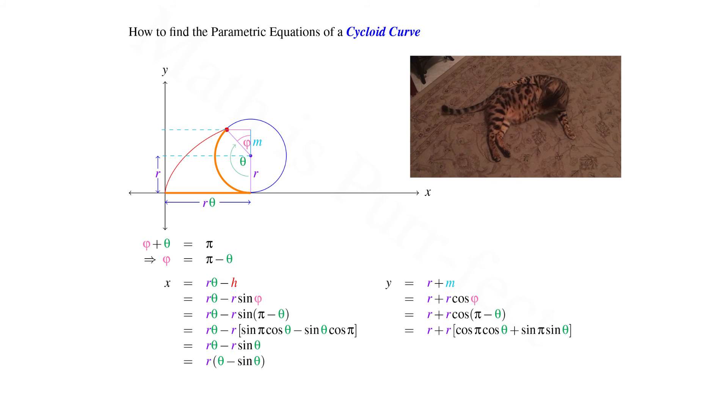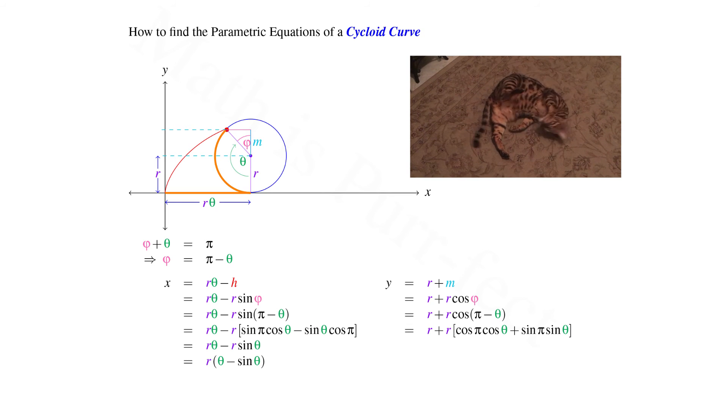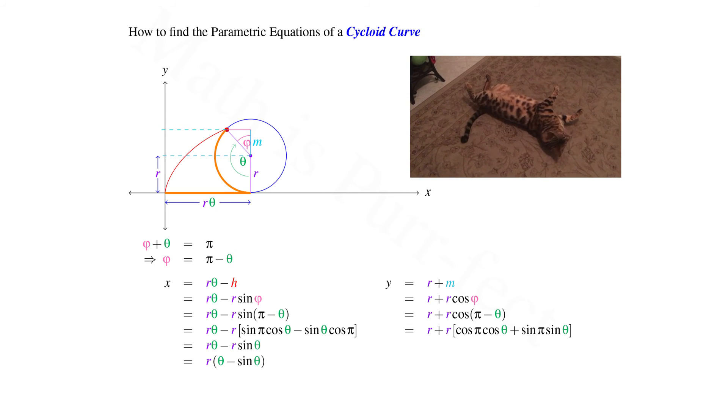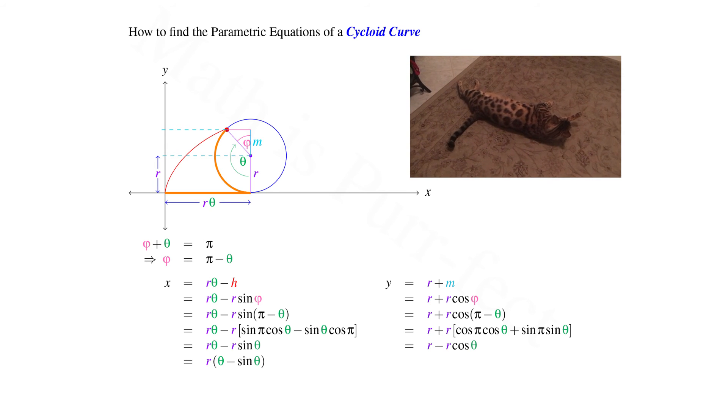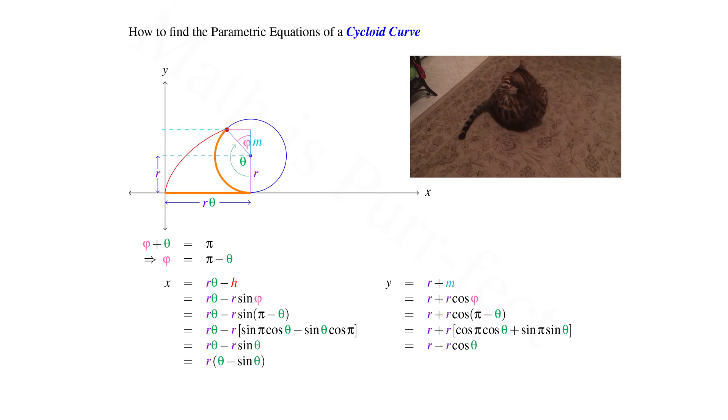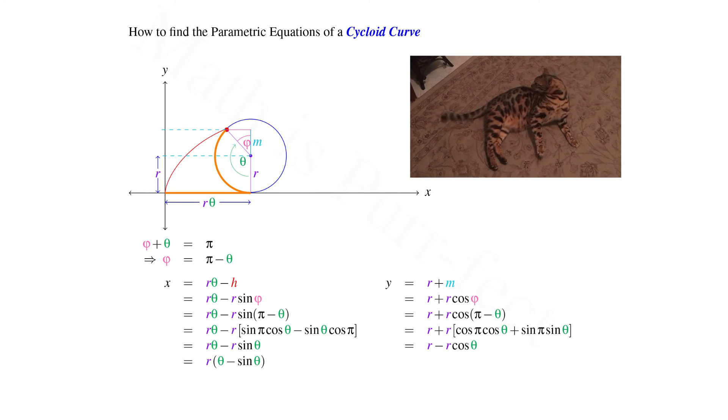Using the difference formula for cosine, we expand this expression into r plus r times the quantity, cosine pi times cosine theta plus sine of pi times sine theta. Given that cosine of pi is negative 1, and sine of pi is 0, this simplifies to r minus r cosine of theta.